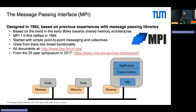The standard grew from simple functionality, and you all know the size of the standard today — we can't print it as a book anymore. Functionality was added, but the base functionality is still there and you can still write MPI 1.0 programs. All documents are on the MPI Forum web page, where you can download all the standards, old and current, and see ongoing discussions. There was also a symposium at the 25th year anniversary held at Argonne with very interesting talks available through the website.